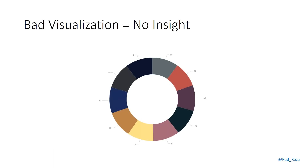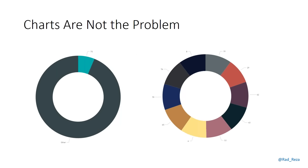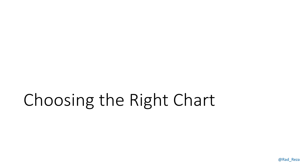If you get your visualisation wrong, you get no insight. I've seen bad pie charts, column charts, bar charts. Here's an example: the donut chart on the left is pretty useful — you can understand the proportions clearly. But the donut chart on the right doesn't give me anything; I cannot understand which is bigger or smaller. Charts are not the problem — it's the way you use them that determines whether you get poor results or the best insight.